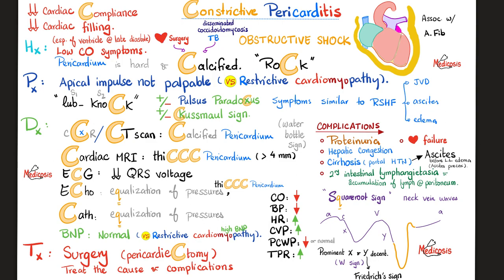I have very thick, calcified, hard pericardium. Instead of hearing lub-dub, I will hear lub-knock because I'm knocking against the calcified pericardium — this is decreased cardiac compliance and decreased cardiac filling. Less input equals less cardiac output and less blood pressure. The baroreceptor reflex gives me tachycardia. Low blood pressure plus tachycardia equals hemodynamic instability — obstructive shock. On chest X-ray or CT scan you'll see the calcified pericardium like a thick border around the heart, called the water bottle sign.